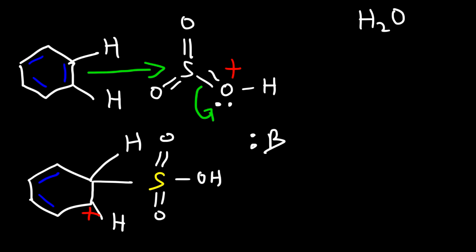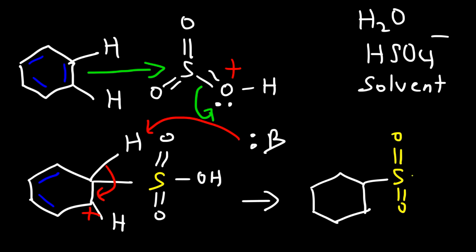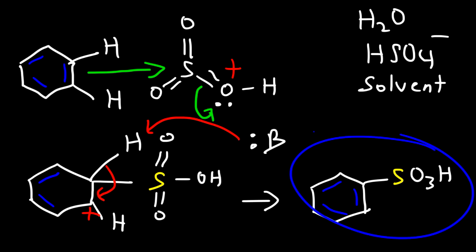The base can be water, because when the two sulfuric acid molecules reacted with each other, water was produced. We could also use the bisulfate ion as a base, because when the second sulfuric acid molecule lost a proton it generated this ion. Or if there is another solvent present, the solvent can act as a base too. Using a generic base to remove the proton causes the carbon-hydrogen bond to break, regenerating the aromatic ring. This gives us benzene sulfonic acid, which you can write as SO₃H on the ring.